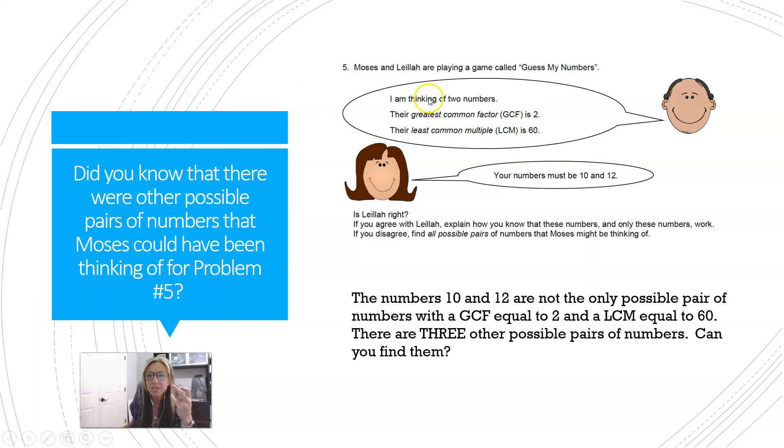When Moses said he's thinking of two numbers, the GCF is 2 and the LCM is 60, Leila said his numbers must be 10 and 12. So what most of us did was we checked the numbers 10 and 12. We said, okay, their GCF is 2, their LCM is 60. Leila must be right.